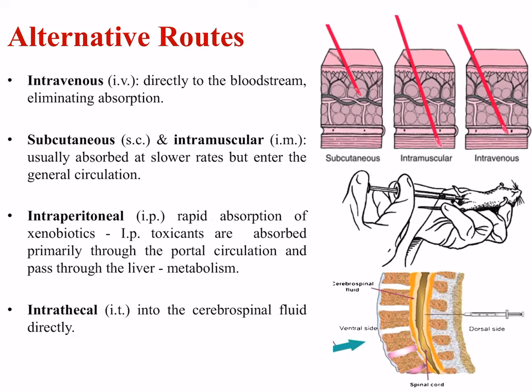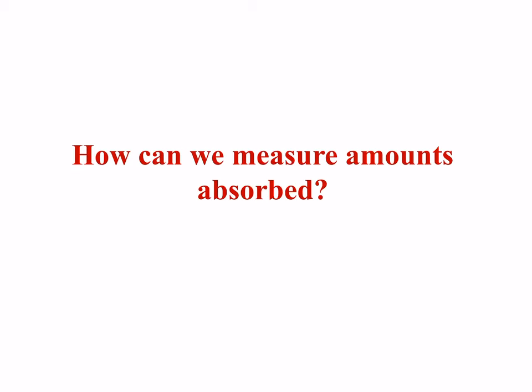Toxicants can also reach the blood supply through routes other than ingestion, inhalation, or skin contact. Intravenous injection delivers toxicants directly to the bloodstream, eliminating absorption entirely. Subcutaneous (SC) and intramuscular (IM) injection usually results in absorption at slower rates but still allows entry into general circulation. Intraperitoneal (IP) injection results in rapid absorption of xenobiotics primarily through the portal circulation, and therefore toxicants pass through the liver where they can be metabolized. Intrathecal (IT) injection involves entry directly into the cerebrospinal fluid.